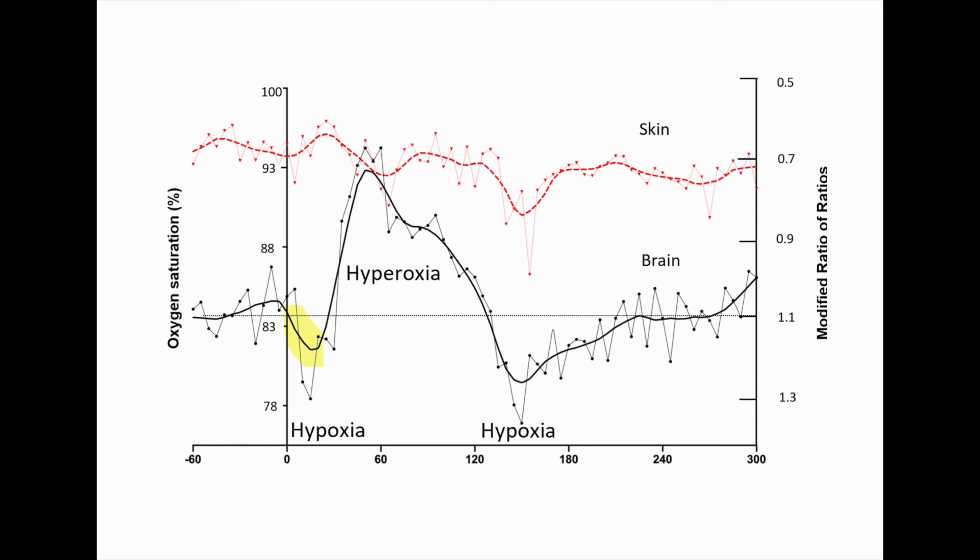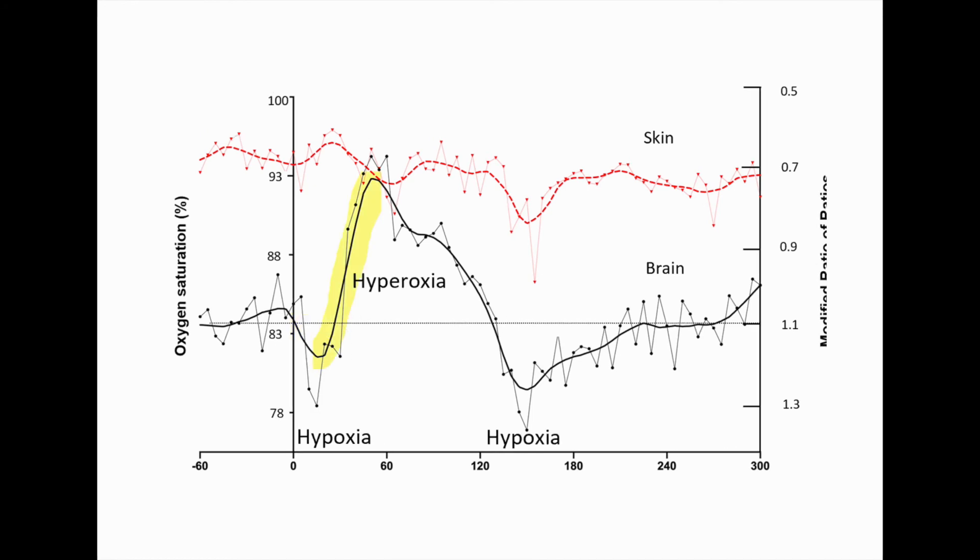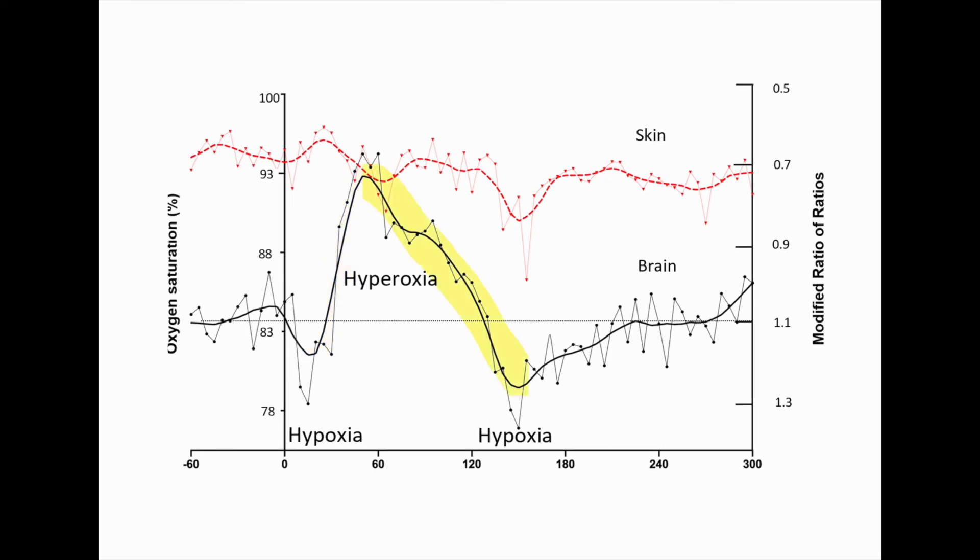The initial fall in brain oxygen levels is consistent with a decrease in cerebral perfusion due to the increased intracranial pressure. The subsequent increase in brain oxygen levels is consistent with changes in cerebral blood flow as part of brain autoregulation to restore brain oxygen levels. This results from cerebral vasodilation and a systemic increase in blood pressure, which together can result in a brief period of cerebral hyperperfusion and very high brain oxygen levels. The subsequent fall around 150 seconds may also represent autoregulation and a reduction in cerebral blood flow to normalize brain oxygen levels.